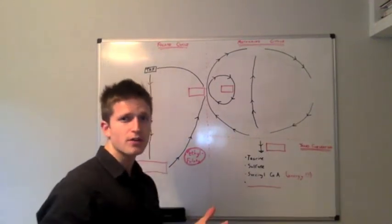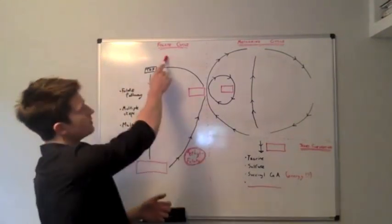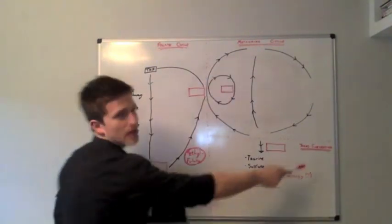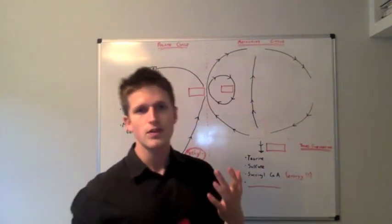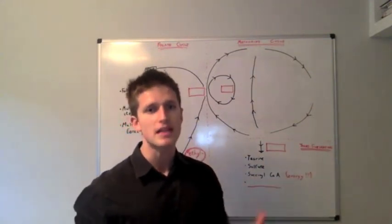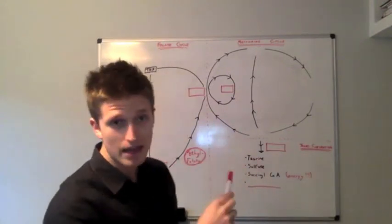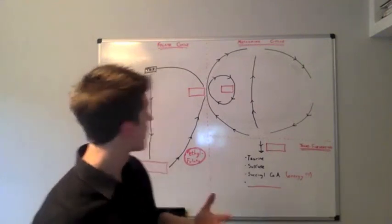So, on the board I'm showing you, we have three pathways. We have the folate cycle, we have the methionine cycle, and we have the trans-sulfuration cycle. Now, if you're not familiar with these words and these terms, you don't need to understand it all right now. That's okay. And I haven't actually filled everything out on the board yet. So, you're not going to understand what everything is and where everything means. That's fine.